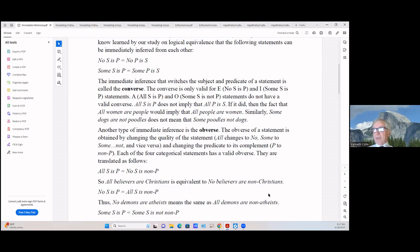Another type of immediate inference is the obverse. The obverse of a statement is obtained by changing the quality of the statement—all change it over to a no, and some change it over to some not, and that's first, you can go either way—and changing the predicate to its complement, P to non-P. Each of the four categorical statements has a valid obverse. They are translated as follows: all S is P. Now keep in mind that P could be much much larger than the S, and S is just part of the P.